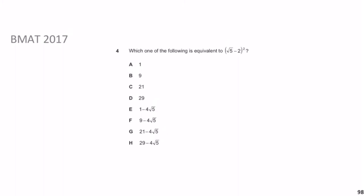Hopefully this one wasn't too bad. So we write out the brackets: (√5 − 2)(√5 − 2). Expanding: √5 times √5 is 5; outside gives −2√5; inside gives another −2√5; and last gives +4. Simplifying: 5 + 4 − 2√5 − 2√5 = 9 − 4√5. That maps onto F.